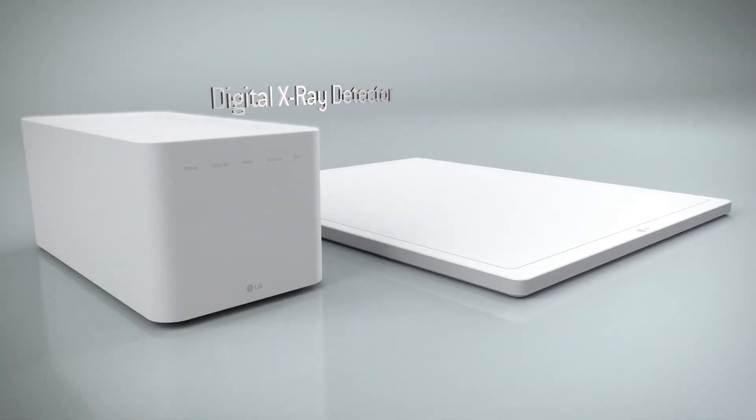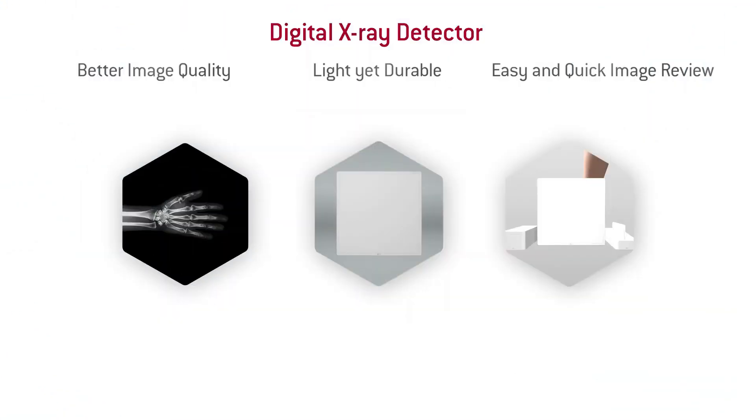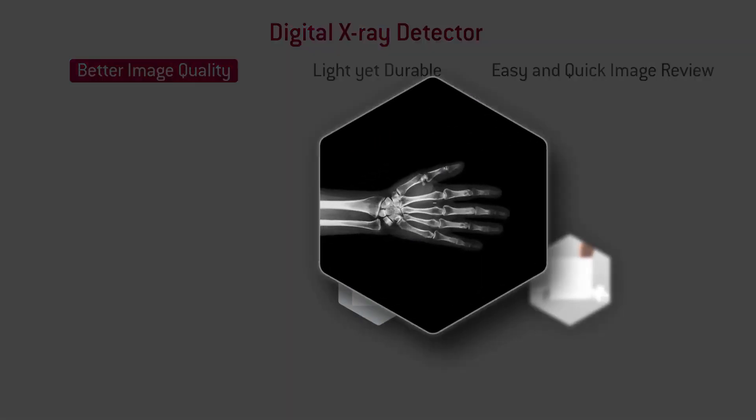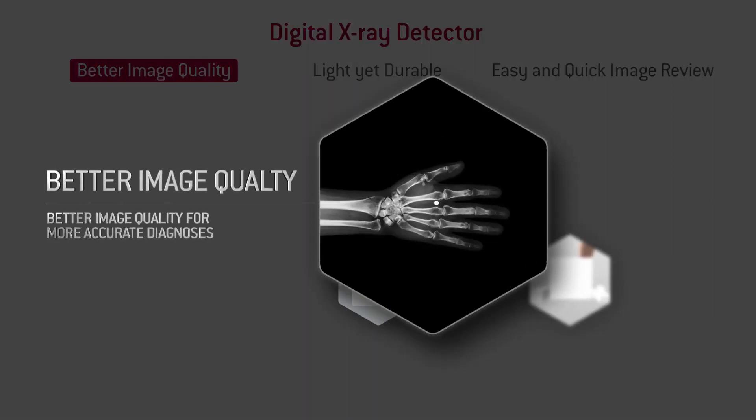Indirect detectors contain a layer of scintillator material, typically either gadolinium oxysulfide or cesium iodide, which converts the x-rays into light.